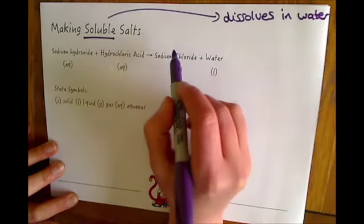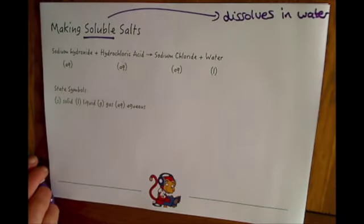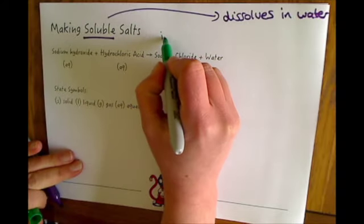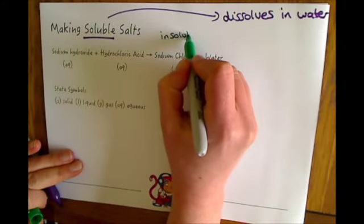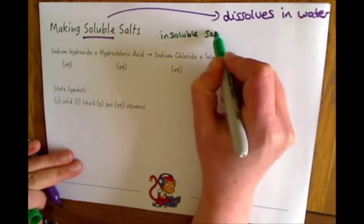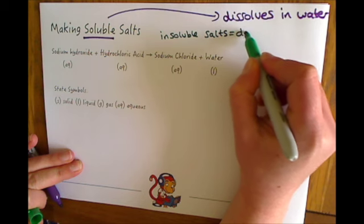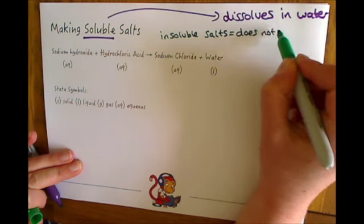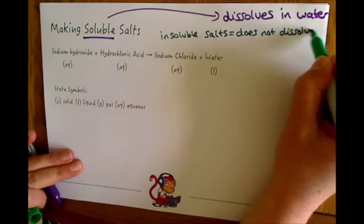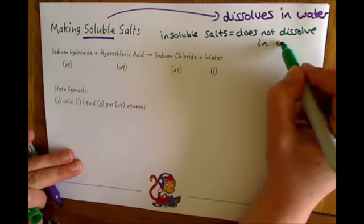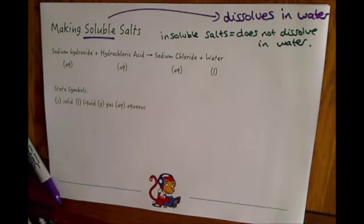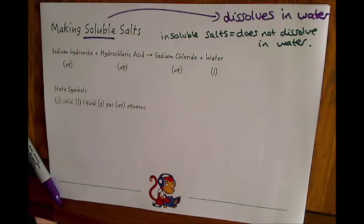The opposite of that is an insoluble salt, which we'll talk about in another video — insoluble means it does not dissolve in water. We need to be able to recognize when a soluble or insoluble salt is formed and how we would then go on to separate that salt.